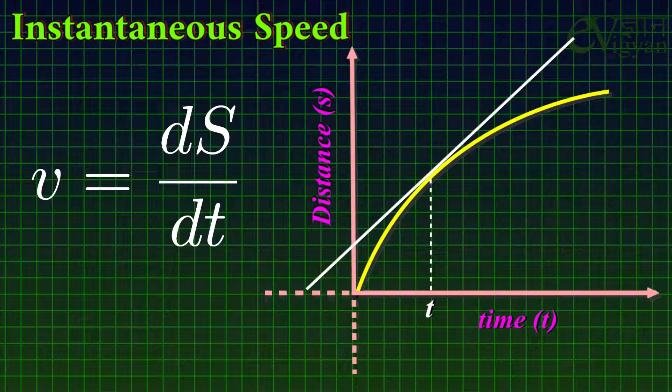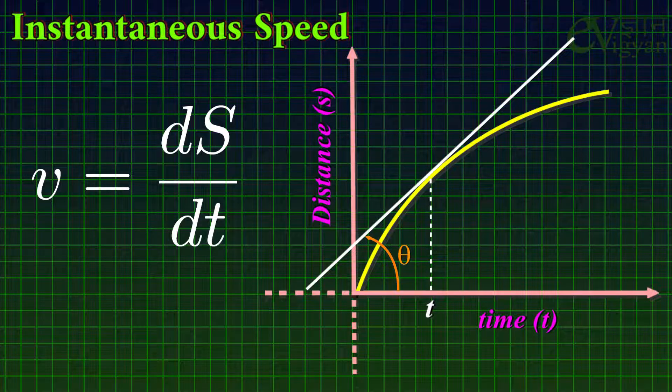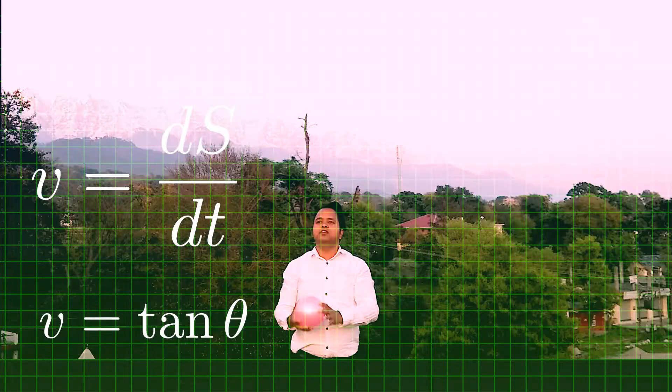Here in this graph, the tangent line on the curve at time t makes an angle theta with the time axis, so the instantaneous speed at that time is V = tan(theta).